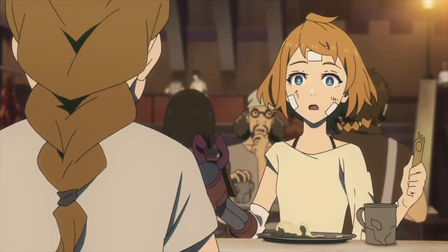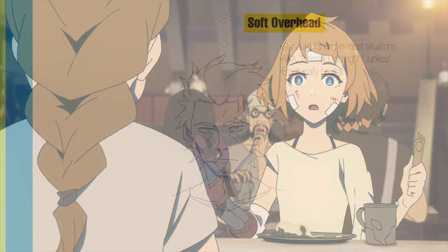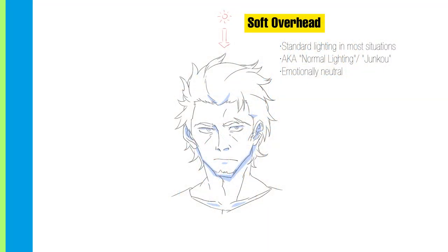On average, 80-90% of scenes are lit with a soft overhead light regardless of time or location. This is generally referred to in the industry as Junko, or normal lighting. This is a quick, simple, neutral way to apply your shadows to give your characters a sense of solid structure and form.